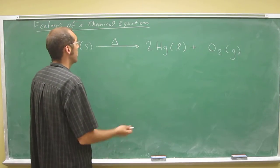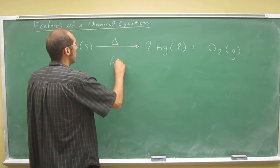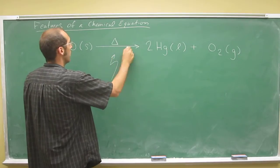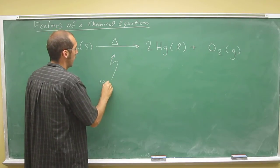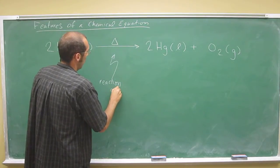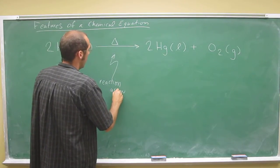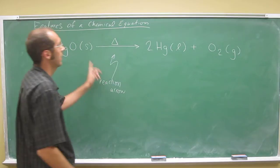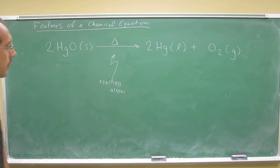The first essential feature that you need to know is this thing in the middle, it's called the reaction arrow. And that reaction arrow just tells us that some change has happened, a chemical or physical change. In this case, it's a chemical change.